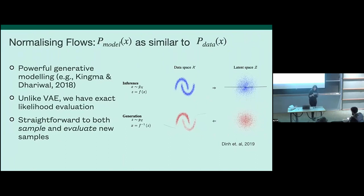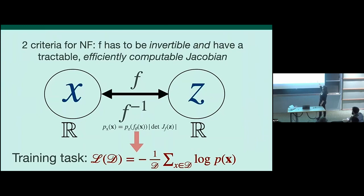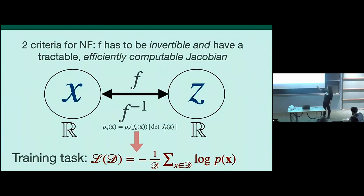A normalizing flow is a large generative model — we're trying to get P_model as similar as possible to the process that generated our data. With variational encoders we have exact likelihood evaluation. The intuition is that you have a complicated probability space and you want to move into a simpler one in a meaningful way. You use a well-designed invertible neural network to move between random variable X with a complicated PDF and Z with a simple PDF such as a Gaussian. The training task is to minimize the negative log likelihood, backpropagating to get the optimal parameters theta.